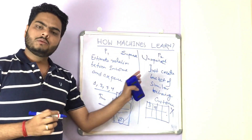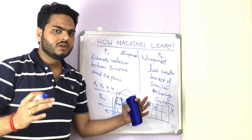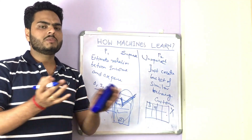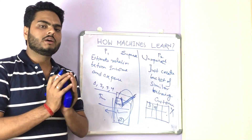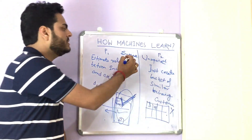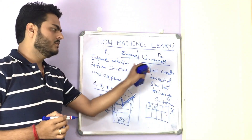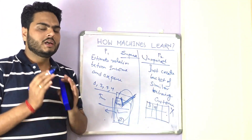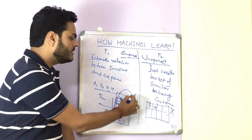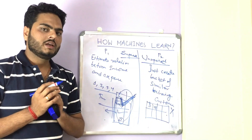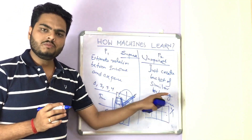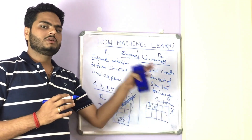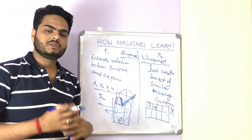Machine learning algorithms are broadly divided into two buckets. There are others which I will discuss in upcoming videos, but the broader categories are supervised and unsupervised machine learning. In supervised machine learning, we predict or estimate something, and hence we have labeled data. In unsupervised machine learning, we do not have anything to predict or estimate — that is called unsupervised machine learning.